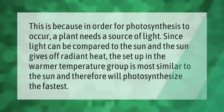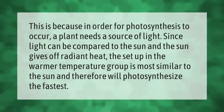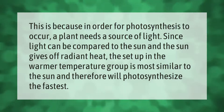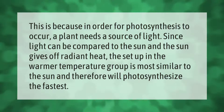In order for photosynthesis to occur, a plant needs a source of light. Since light can be compared to the sun and the sun gives off radiant heat, the setup in the warmer temperature group is most similar to the sun and therefore will photosynthesize the fastest.